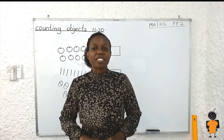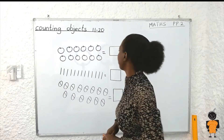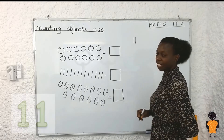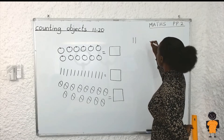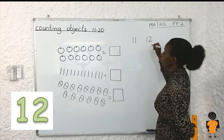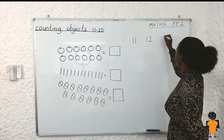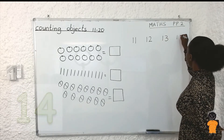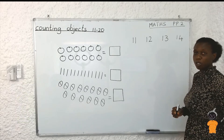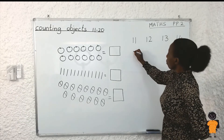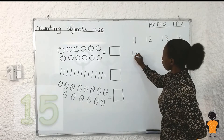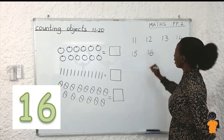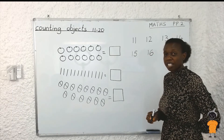I want us to write these numbers together. Come along with me. We are going to start from number 11 — we write 1 and 1: eleven. From 11 we go to number 12: 1 and 2, twelve. Then we go to number 13: 1 and 3, thirteen. Number 14 is 1 and 4. Then we go to number 15, which is 1 and 5. Number 16: 1 and 6. From 16 we go to 17 — how do we write number 17?